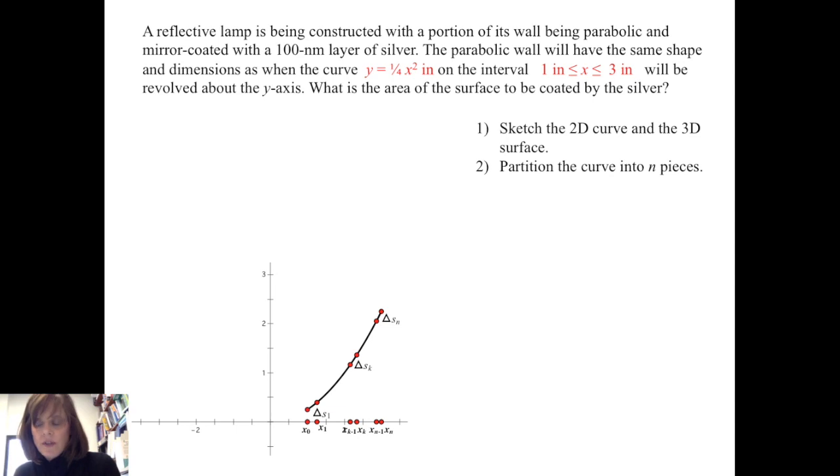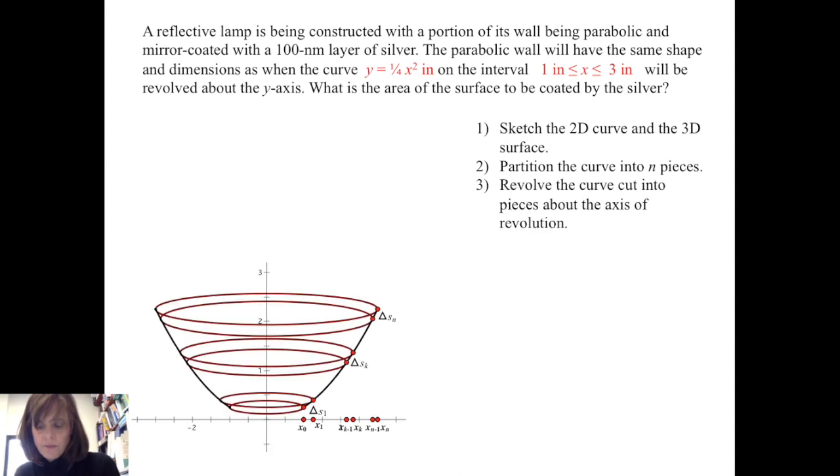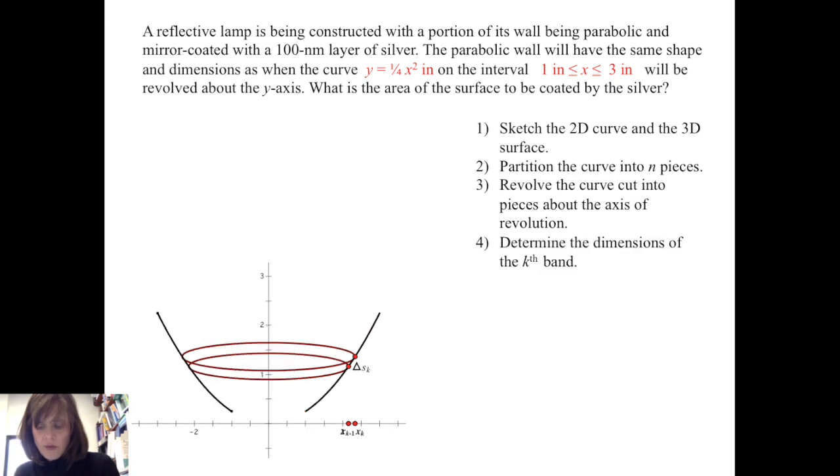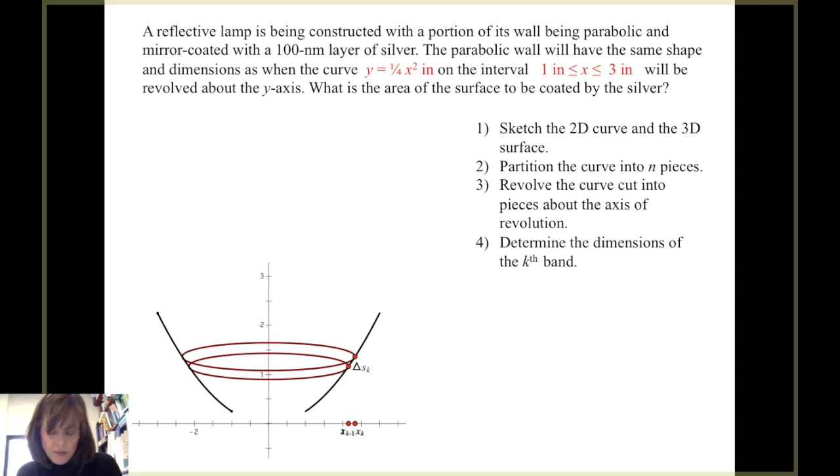Next we want to partition the curve into n pieces. We'll do it both ways, but we'll begin by partitioning the x interval from one to three. And we want to consider what happens as we revolve those small pieces about the axis of revolution, and we want to determine the dimensions of the k-th band.